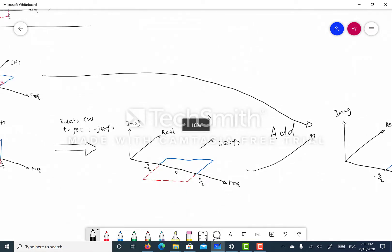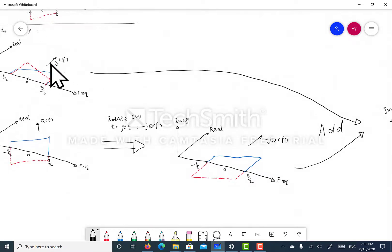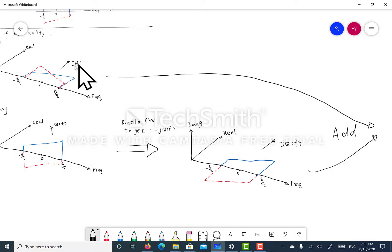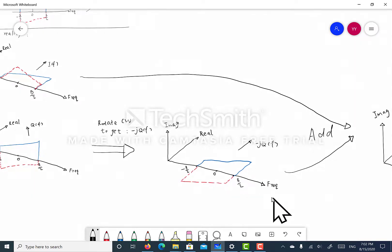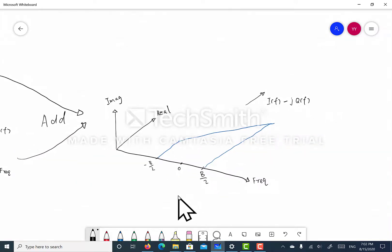And this term would be minus j times q(f). Now if we add this term with the in-phase component, we can see since the two of them are occupying the same plane, we can do algebra. And the negative frequency component cancels each other, and the positive frequency component combines. In fact, they double. And hence we get our desired result, which is i(f) subtract j times q(f).